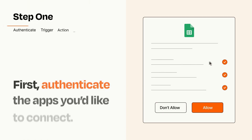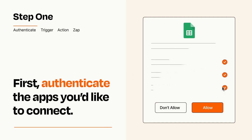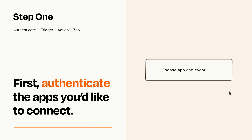It's easy. To get started, you'll just need to authenticate your apps, which takes just a few seconds. Zapier meets industry standards for encryption when connecting with each of your apps.